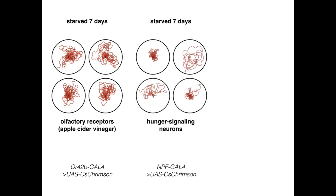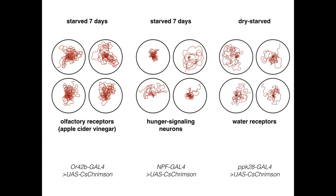These neurons detect the appetitive odor of apple cider vinegar. Activation of hunger-signaling neurons in the brain also triggered local searches in seven-day starved animals. Even activating water sensors triggered searches in animals that had experienced desiccation.